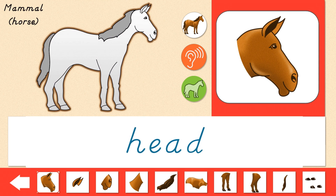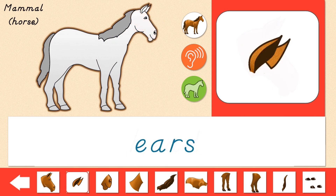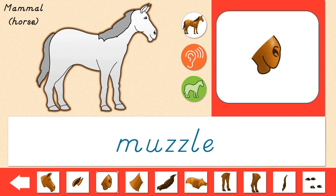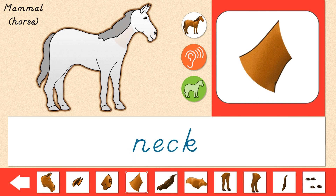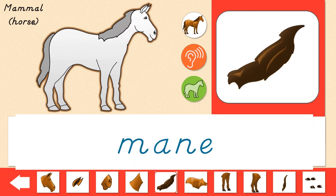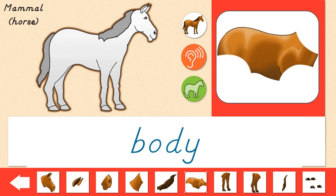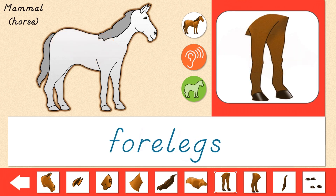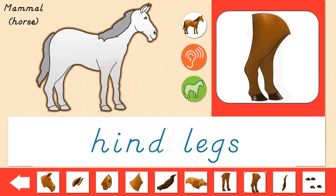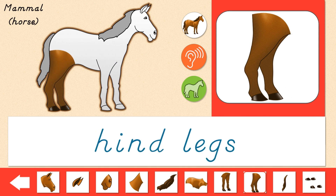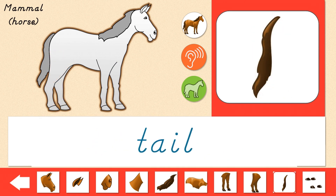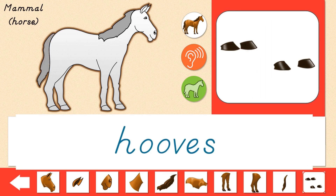Head. Ears. Muzzle. Neck. Mane. Body. Forelegs. Hindlegs. Tail. Hooves.